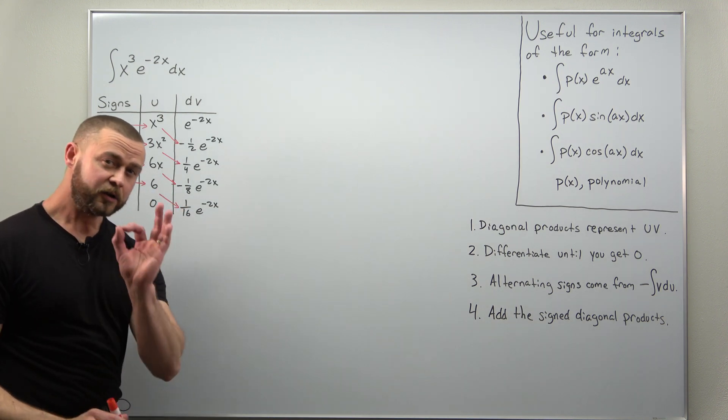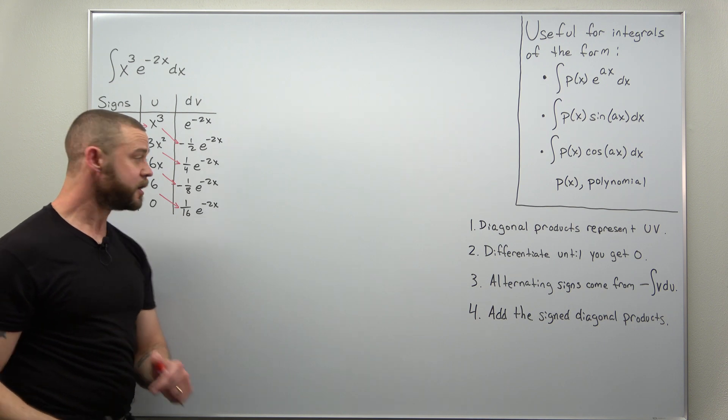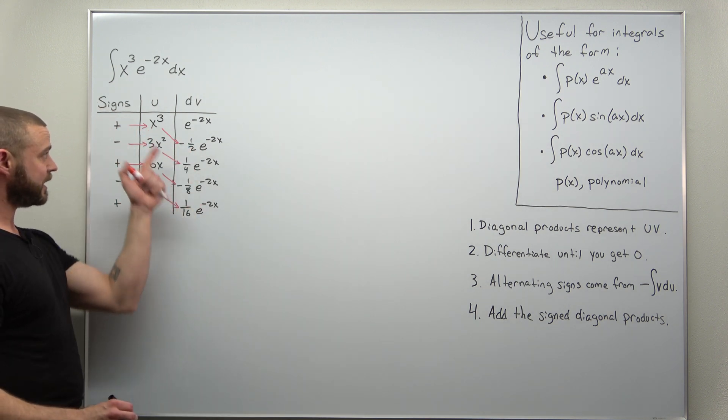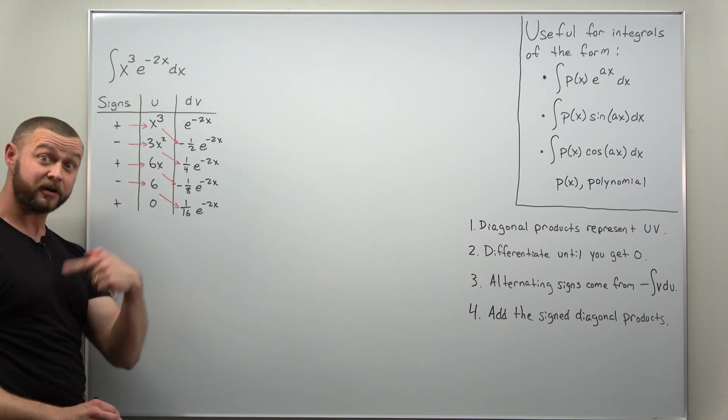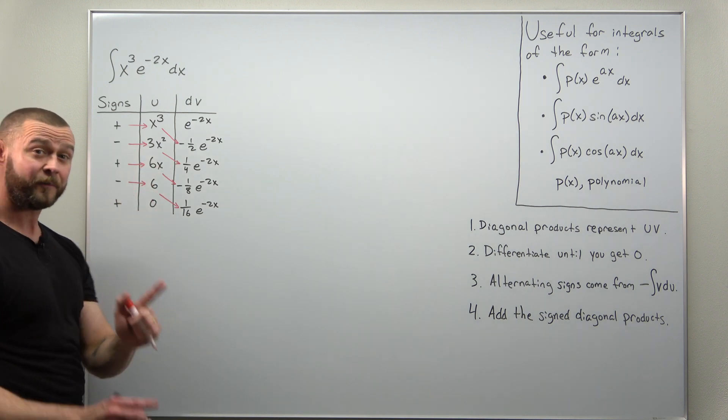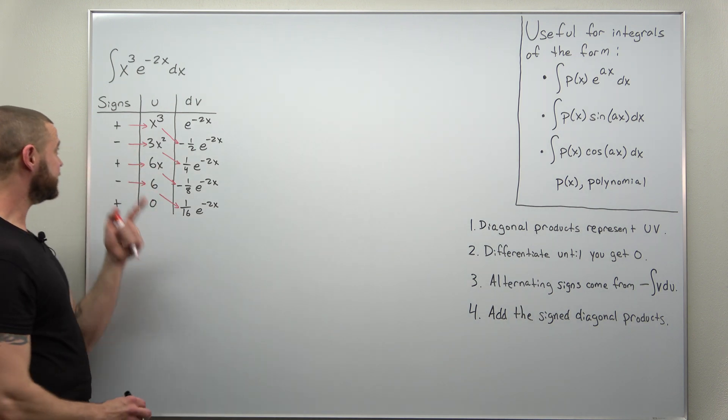Now we can clean up our answer here as we go. Notice every term here contains an exponential. Every diagonal has a factor of e to negative 2x, and also notice every diagonal has a negative there.